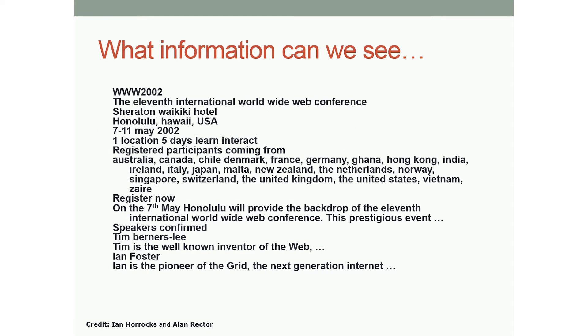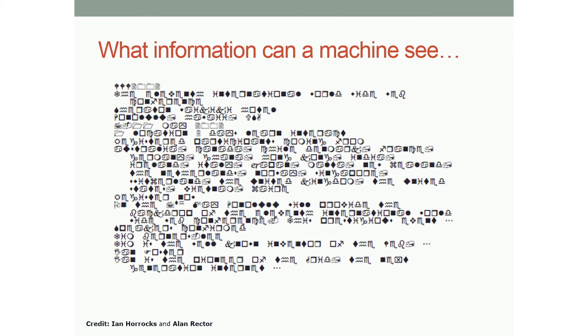This is what we can see. Without the rendering information, we can still understand what the page presents to us — like the conference topic, how to register, where the conference is, and what the focus is. But this is what a machine can see. Without the semantics, a computer program can only view it as a bunch of symbols, because it doesn't understand the semantics behind the text. Like you and I can talk because we understand English — if I show you a language you don't understand, it's just symbols to you.